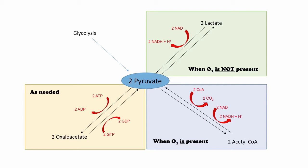Remember that the Krebs cycle starts and ends with an oxaloacetate, so the need for making more is limited and mostly dependent on how fast the molecule naturally breaks down, how much oxygen is present, and how much the energy demands are within that cell.